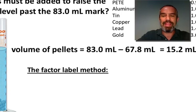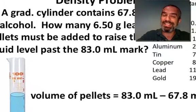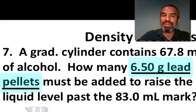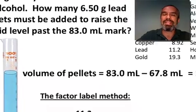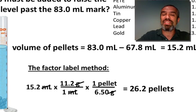So, factor label method, 15.2 milliliters of lead. There's the density of lead. Notice how this time milliliters is on bottom to make it cancel. Now we have how many grams of lead. Now I could stop there, but wait a second. How about we use that 6.50 grams of lead per pellet as a factor label step? Right there. We're trying to get rid of grams and into pellets, so how about that? That gives us an answer of 26.2 pellets.